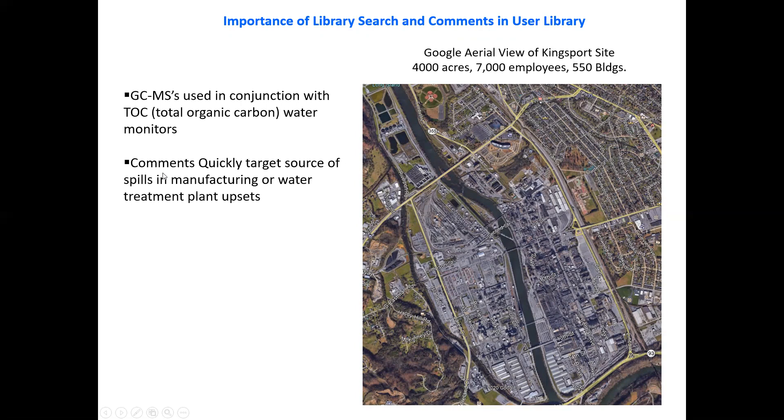Comments in our library, even if they're not identified exactly, quickly target the source of the spills in our manufacturer, our water treatment plant upsets such that they can be isolated from the river. Exact structure is therefore useful, but not necessary. If there's information about where it's being produced or which process, then it can target the location that needs to be monitored and corrected.